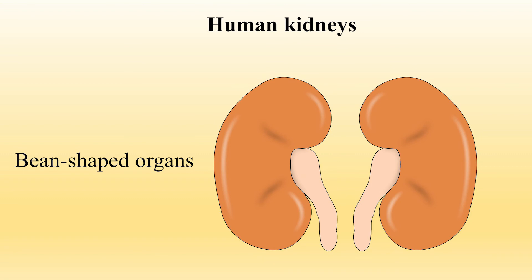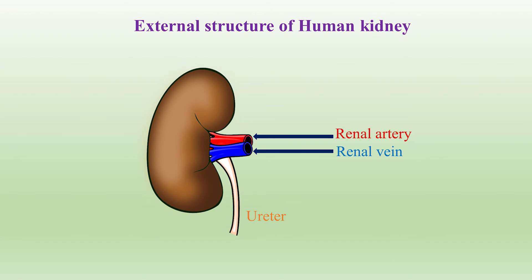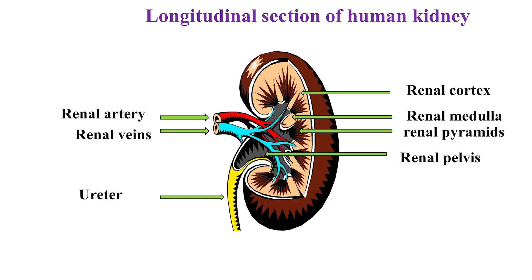Kidneys are bean-shaped organs found in the upper abdomen. Both kidneys lie on back muscles, on either side of the spine. The right kidney is placed a bit lower than the left kidney to accommodate the liver. The external structure shows the renal artery, renal vein, and ureter. In the longitudinal section, the outer layer is the renal cortex, the inner layer is the renal medulla, and the innermost layer consists of renal pyramids. Renal pyramids open into the renal pelvis, and the ureter arises from the renal pelvis. The renal artery and renal vein have multiple branches inside the kidney.